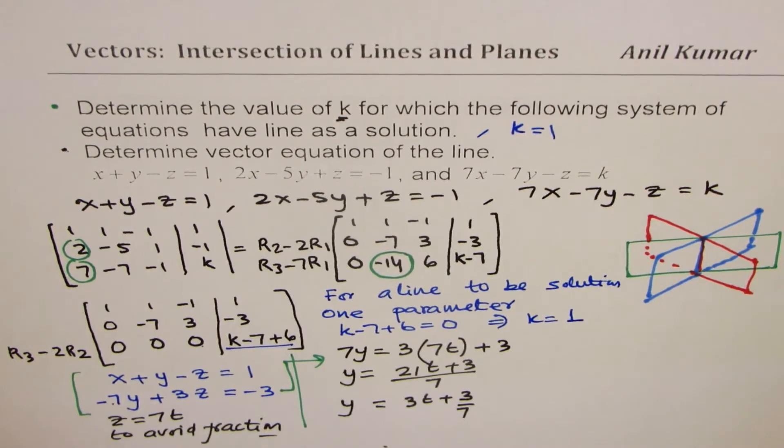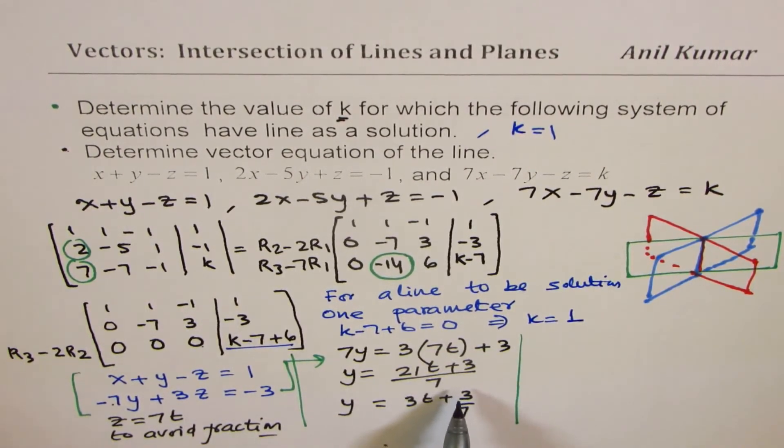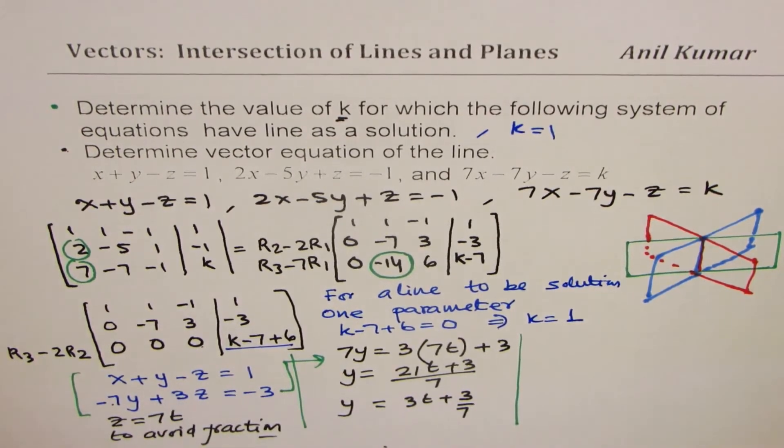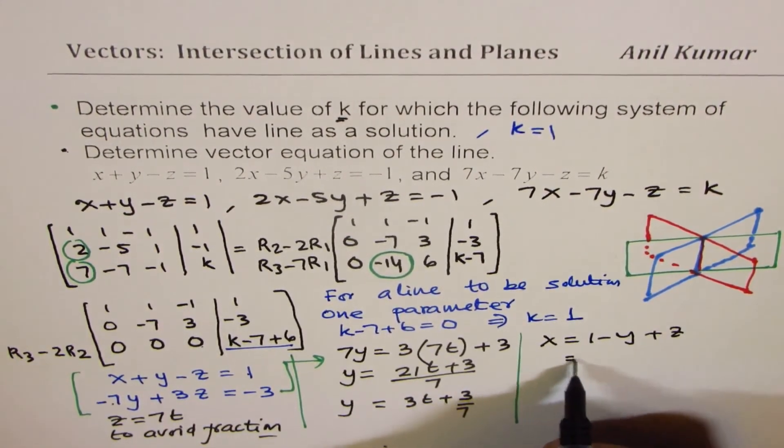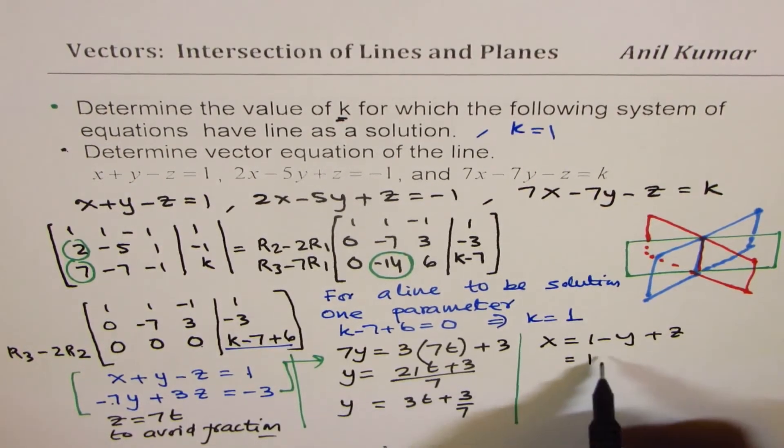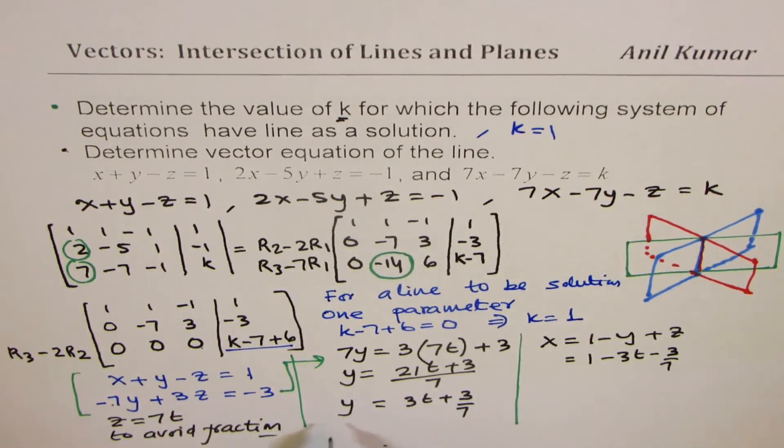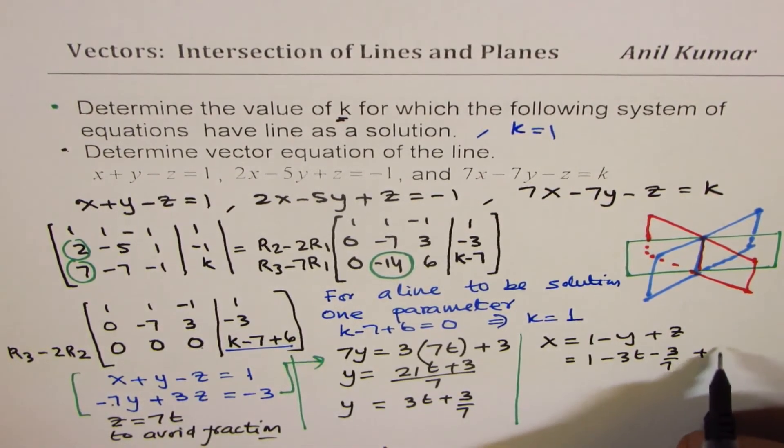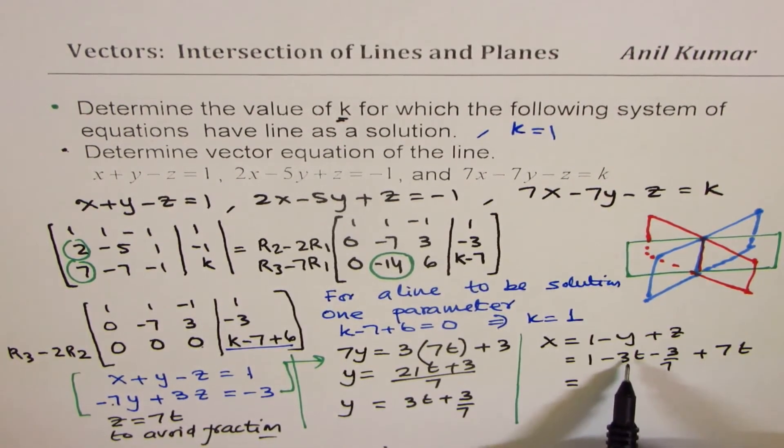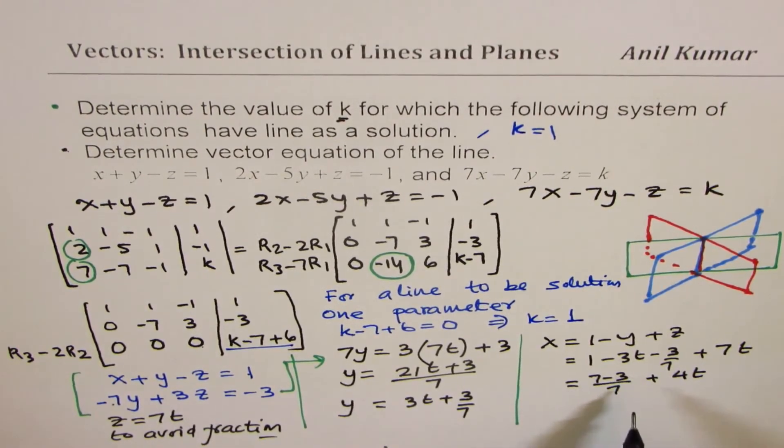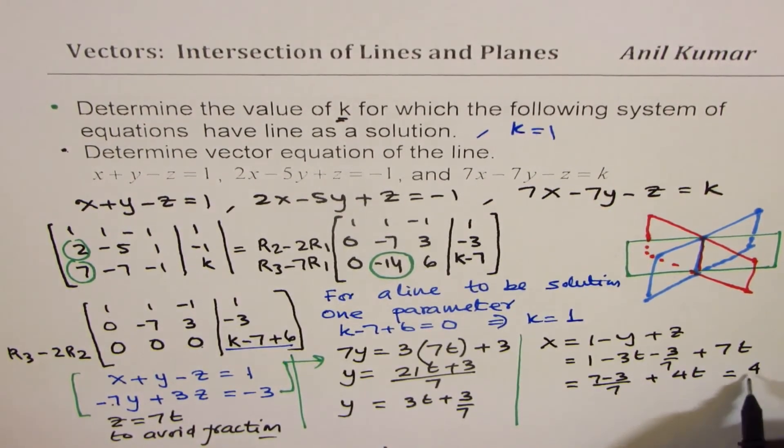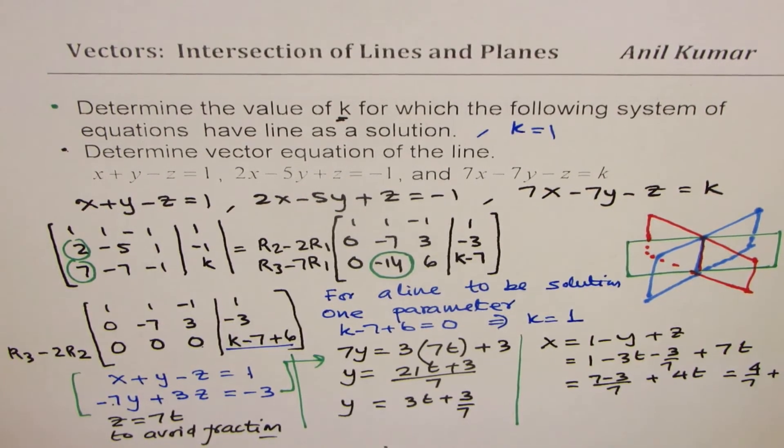Z is 7t. Now, we can actually find the value for x using the first equation. X is equal to 1 minus y plus z, which is 1. Y minus is minus 3t minus 3 over 7. And z is 7t. So, we'll do plus 7t. So, that gives you, t's can be combined. 7 minus 3 is 4. And the numbers can be combined. 7 minus 3. So, we have 7 minus 3 over 7. And here we have plus 4t. 7 minus 3 is 4. So, we get 4 over 7 plus 4t.